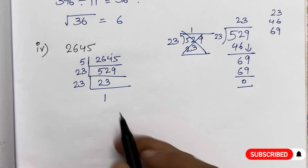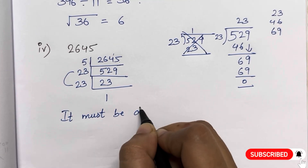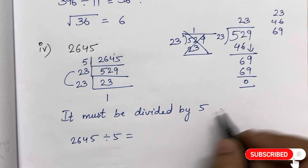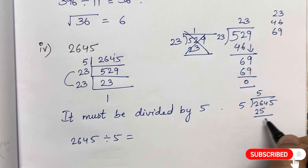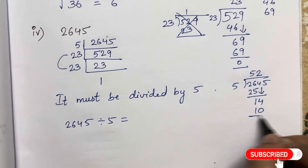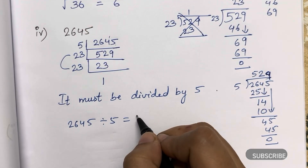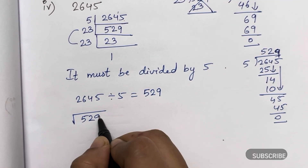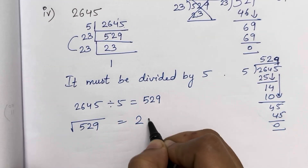We have a pair of 23, but we don't have a pair of 5. So this number must be divided by 5. 2645 divided by 5 is 529. The square root of 529 is 23, because 23 into 23 is 529.